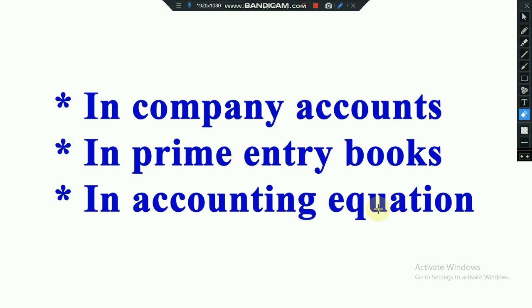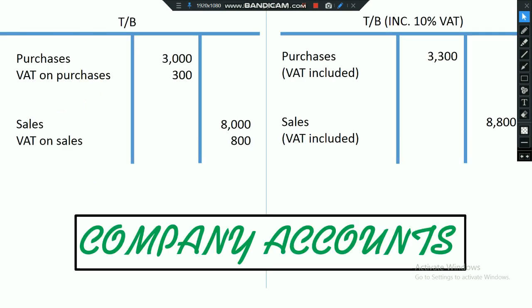We can expect VAT to appear in three places in your accounting paper. First, in company accounts — which is the compulsory question in your second paper and you will get it as the first question. Second, in primary books. Third, in the accounting equation. If we analyze past papers, you can find the first two cases have already been examined, so the third one you have to be very careful about.